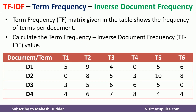Many times we will be given a document and we need to create a matrix, or sometimes a matrix will be given directly. In this matrix, the rows indicate the documents — there are four documents: D1, D2, D3, and D4. The columns indicate the unique terms or words — there are six unique terms: T1, T2, T3, T4, T5, and T6. If documents are given directly rather than this table, we have to write the document number and list the unique words from those documents.